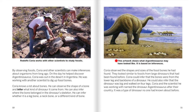This artwork shows what Argentinosaurus may have looked like — it is based on inferences. Correa observed the shapes and sizes of the fossil bones he had found. They looked similar to fossils from large dinosaurs found before. Correa could infer that the bones were from the lower leg and backbone of a dinosaur, and that the dinosaur was big and walked on four legs. Correa and the scientist he was working with named the dinosaur Argentinosaurus after their country — a type of dinosaur no one had known about before.